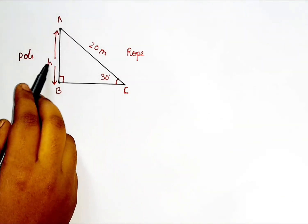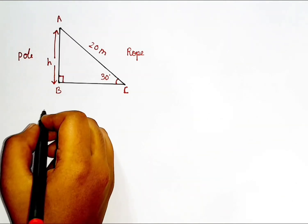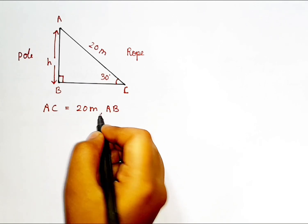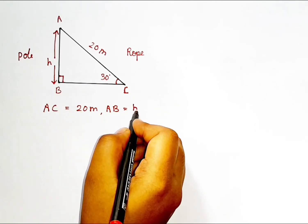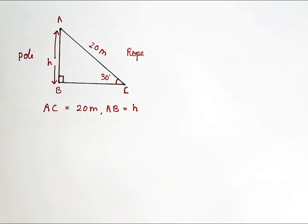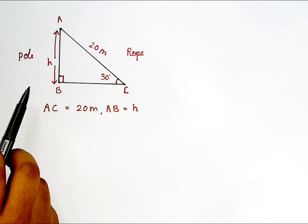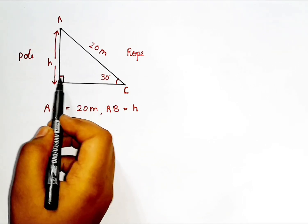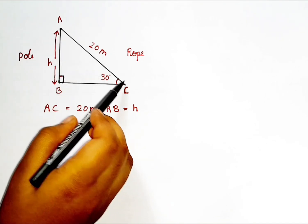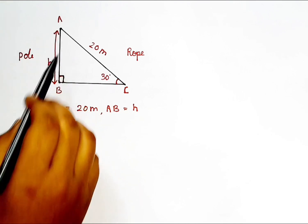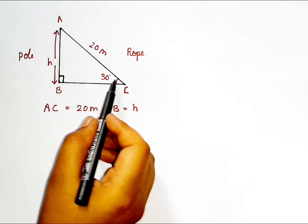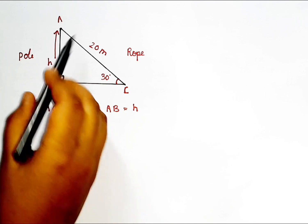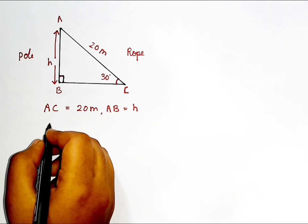We are supposed to find the height of the pole. AC is equal to 20 meters, and AB we take as h, where h means height. Since this is 90 degrees, opposite to 90 degrees is known as the hypotenuse. According to the 30 degree angle, the height of the pole AB is the opposite side, and AC is the hypotenuse.